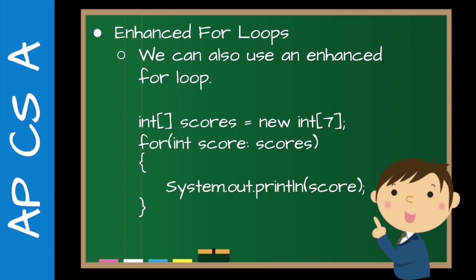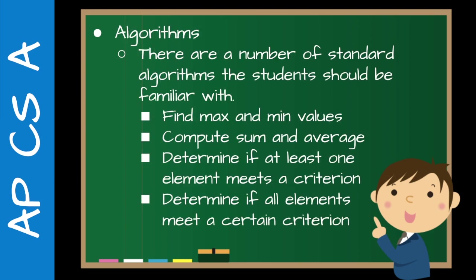We can also do what's called an enhanced for loop, sometimes called a for-each loop. This is the first case where we can really use it without doing something special. What it does is skip the step where you manage indices and pull out the individual item — it just does it for you. So for each score in the array scores, we do something with it, like print it. We'd use this when we're definitely starting at the first element and going all the way to the end. If we wanted to go from end to beginning, we'd have to use a regular for loop or while loop.